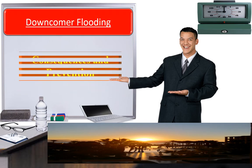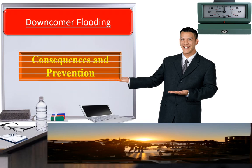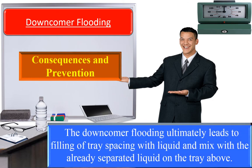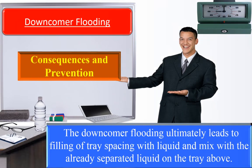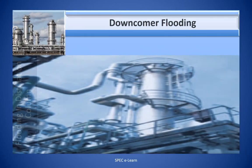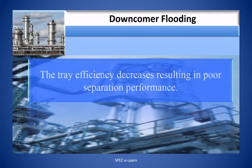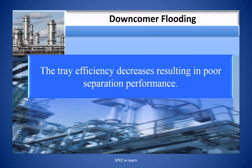Downcomer flooding consequences and prevention. Downcomer flooding ultimately leads to filling of the tray spacing with liquid, which then mixes with the already-separated liquid on the tray above. The tray efficiency decreases, resulting in poor separation performance.